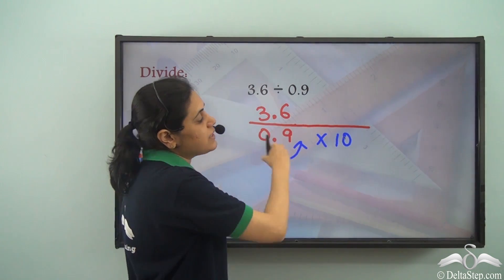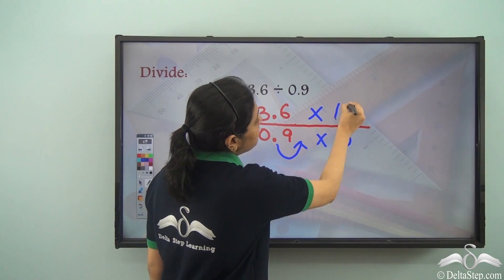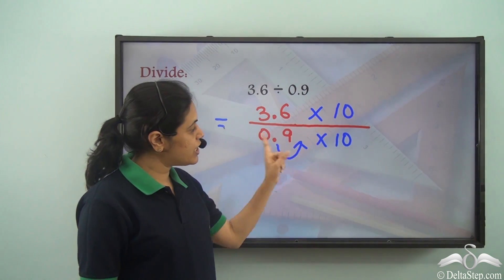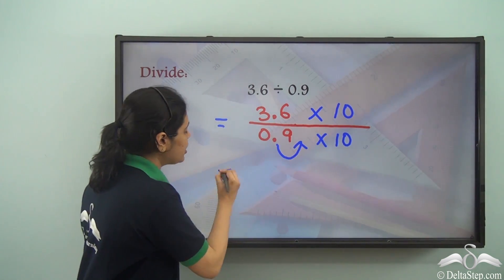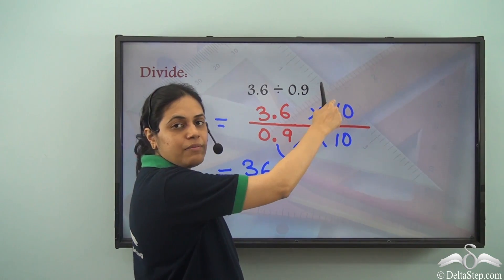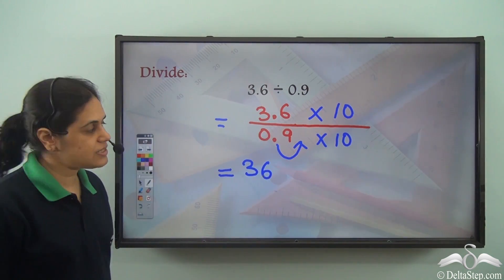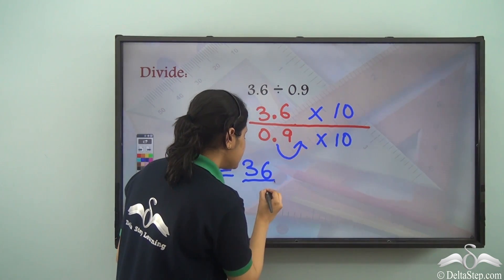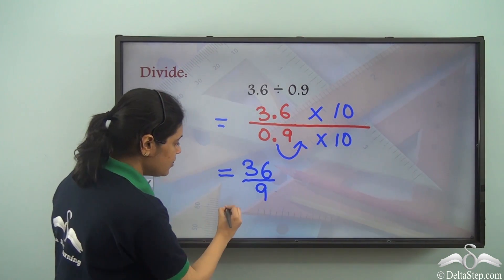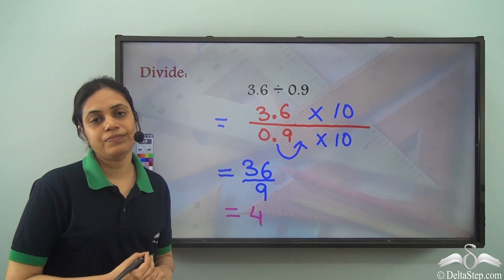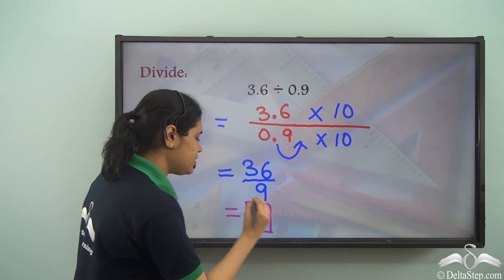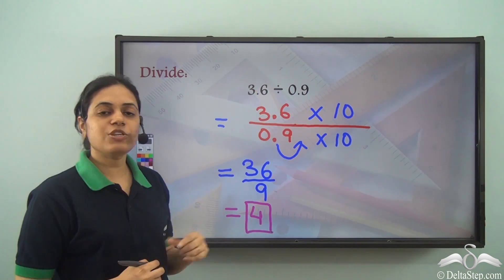If I multiply the denominator by 10, I need to multiply the numerator by 10 as well. So I have 3.6 into 10 and 0.9 into 10. Now 3.6 into 10 is 36, because multiplying by 10 shifts the decimal point one place to the right. And 0.9 into 10 is 9. So what is 36 divided by 9? 36 divided by 9 is 4. So 3.6 divided by 0.9 is 4.